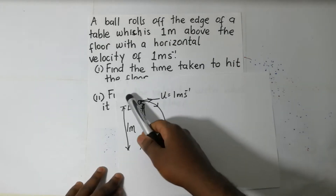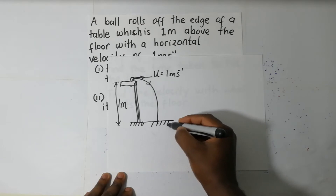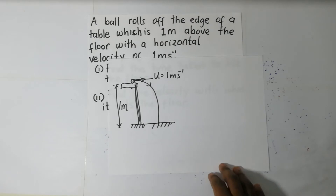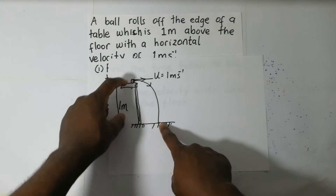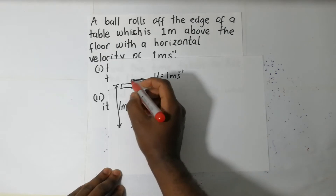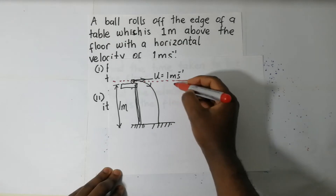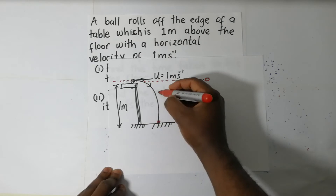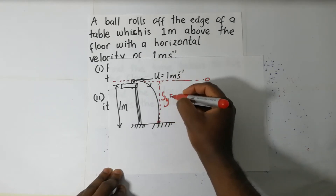We need to find the time taken to hit the floor. When the ball comes and hits the floor, from the point of projection — which is our zero level — it has been displaced in the y direction by negative one meter.